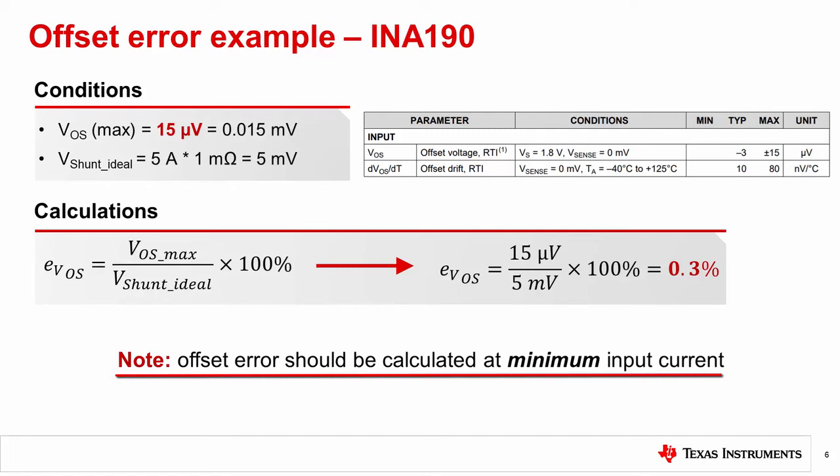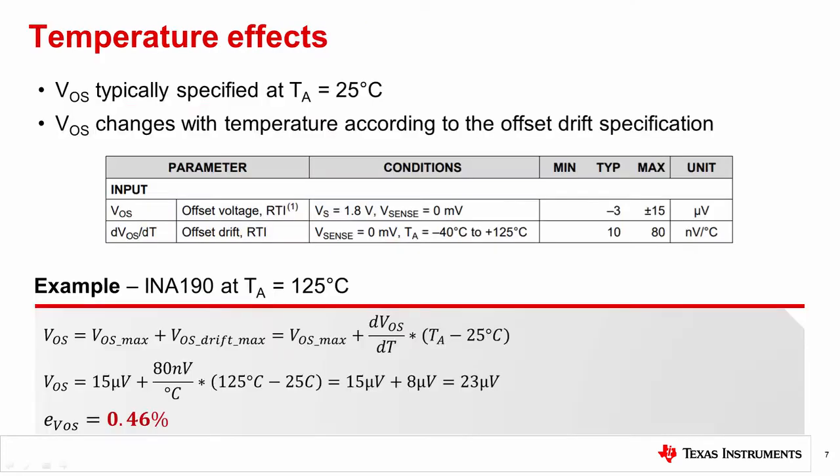It is important to note that offset error should be calculated at minimum input current, since that is the worst case condition when V shunt ideal is the smallest.